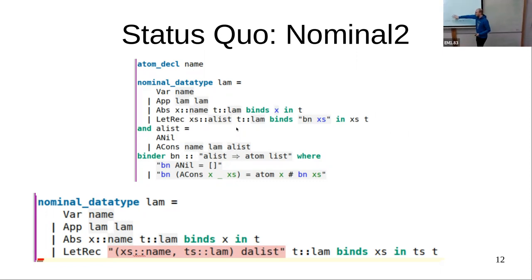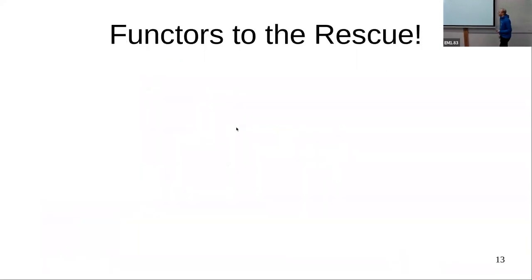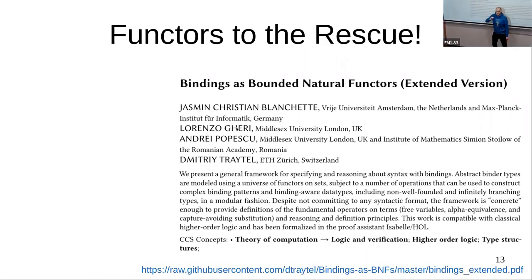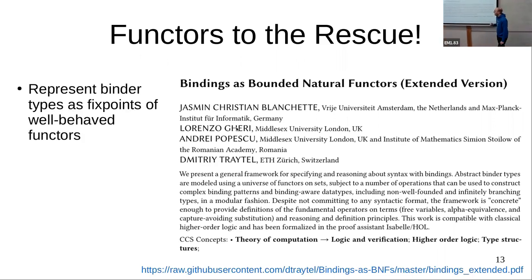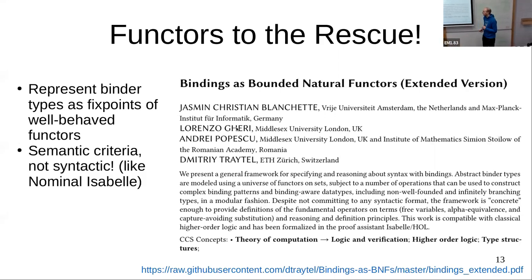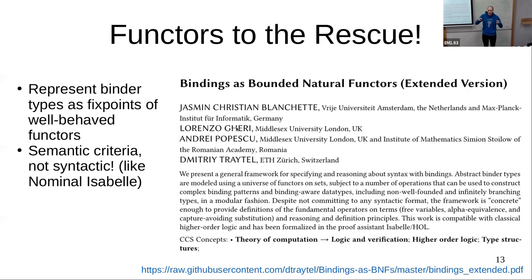So the question is how can we get this definition to work? At POPL 2019 there was a paper proposing approaches to binding where they represent the binding relation as a fixpoint of a class of well-behaved functors. The nice thing is this is only a semantic criterion — as long as you can prove the axioms for this specific class, it can be used as a binding data type, and it doesn't need to be a data type in a classical sense.